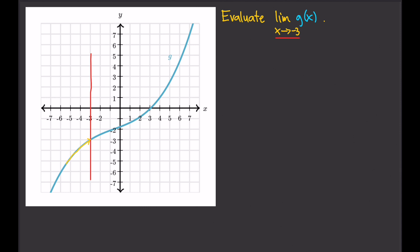Once you hit that wall, you try to find the y-value for wherever you are in the graph. So from the left, I follow the graph and stop when I hit the red vertical line, then find where I am on the y-axis. I'm at negative 3. So the limit of g of x as x approaches negative 3 from the left is equal to negative 3.